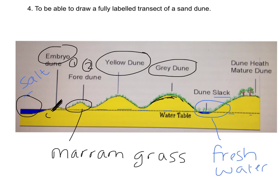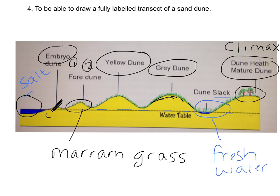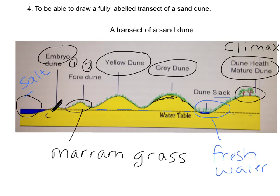Finally we have the dune heath, also called the mature dune or climax community — the last stage — where the soil and vegetation have fully changed and we can find trees. Your task now is to go back to the beginning of this section and draw yourself a fully labelled cross section titled 'A Transect of a Sand Dune' in your notes.